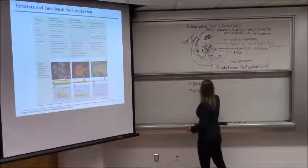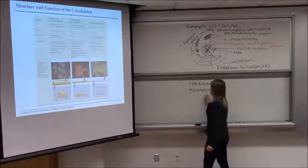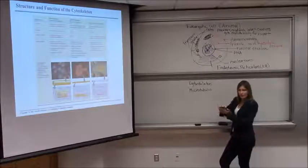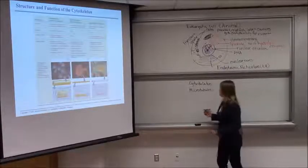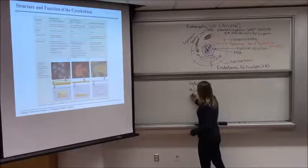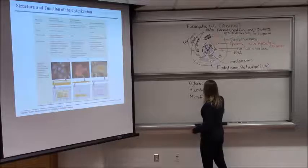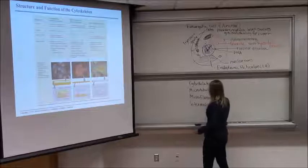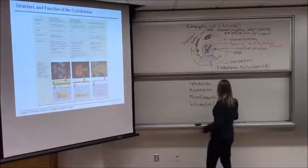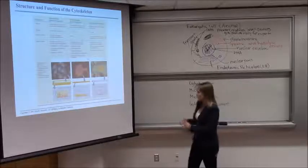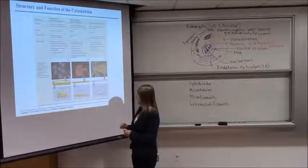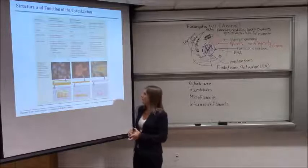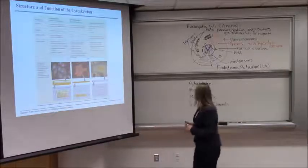So microtubules, microtubules are going to play a very, very important role in cell division. It's the microtubules that are going to pull the sister chromatids into the two separate halves of the cell. So microtubules, microfilaments, and intermediate filaments. And you can see that these three components have slightly different structure, different arrangement of those subunits. You don't need to know that level of detail. What you do need to know, though, are some of the functions of the cytoskeleton.